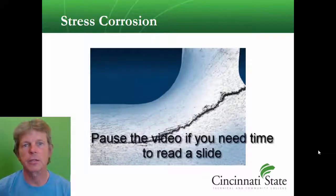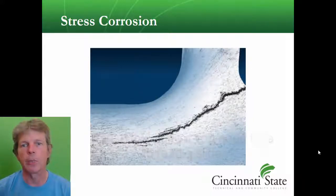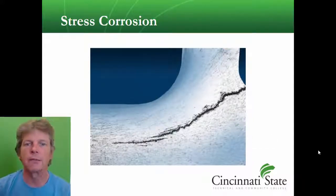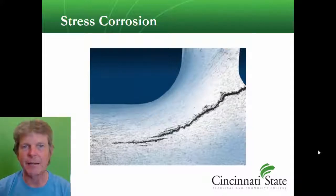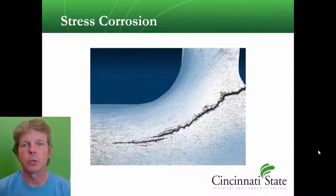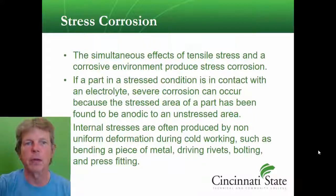Stress corrosion happens somewhere there's a lot of load on a part, where there's a lot of stress. Something like a fitting or a wing skin that is a stress skin — it's carrying a lot of load, it's flexing. You'll get corrosion in these areas, and part of the working back and forth of the metal causes the stress corrosion.